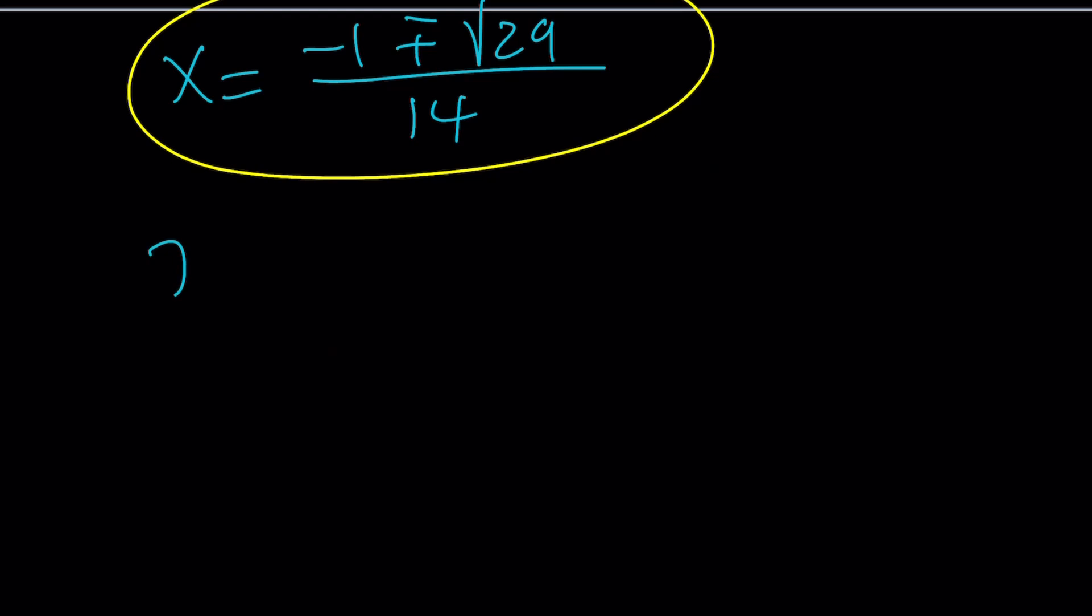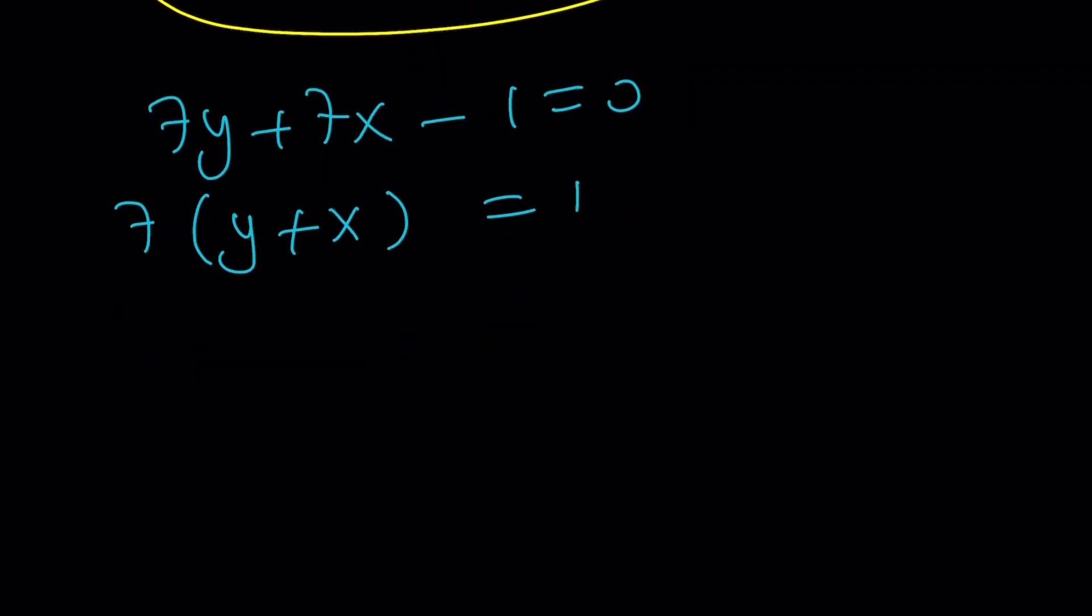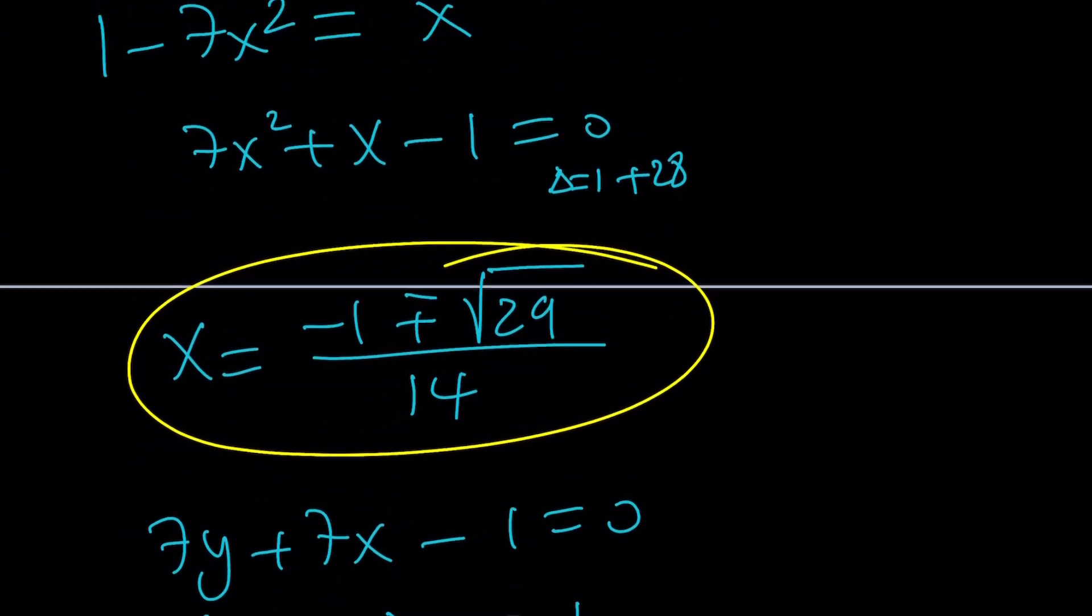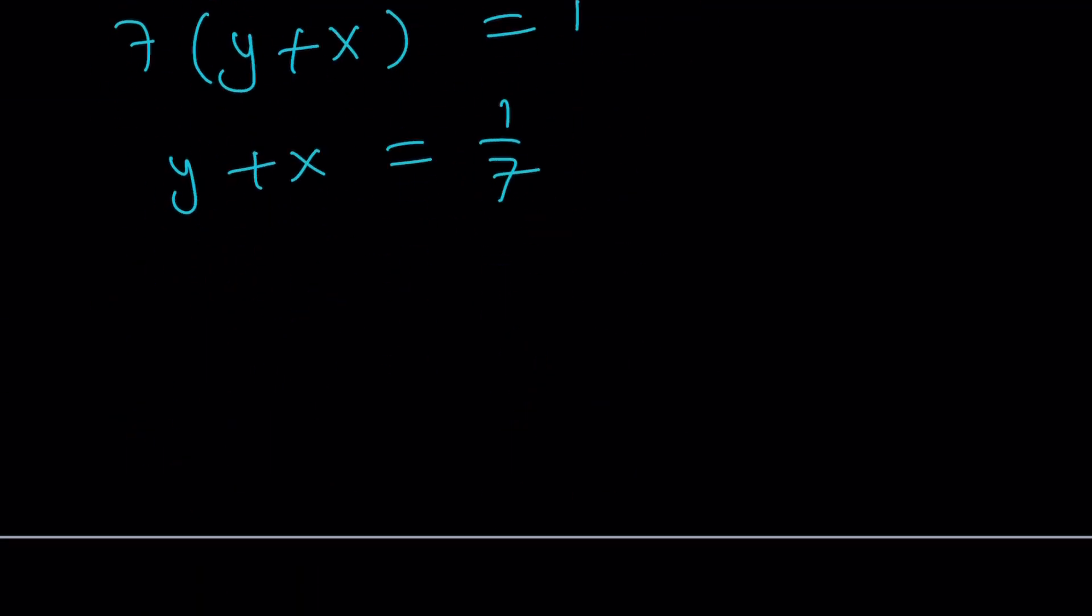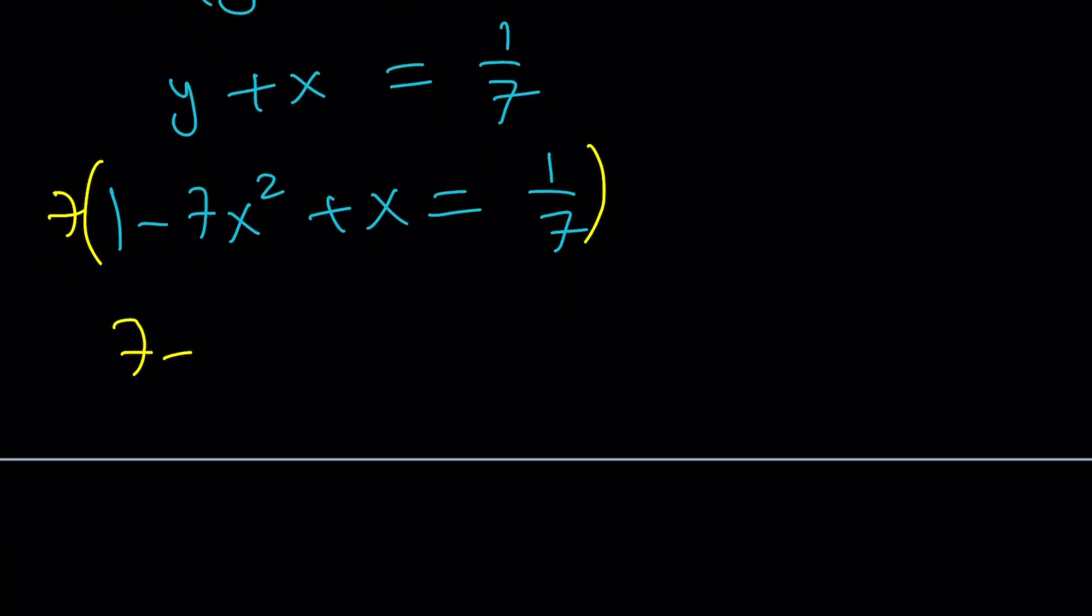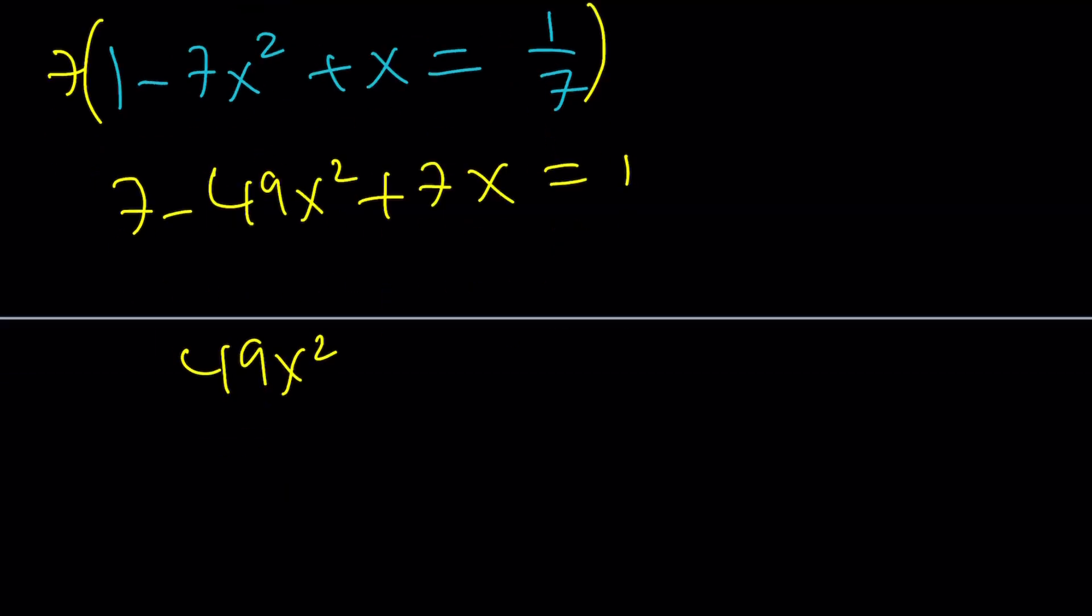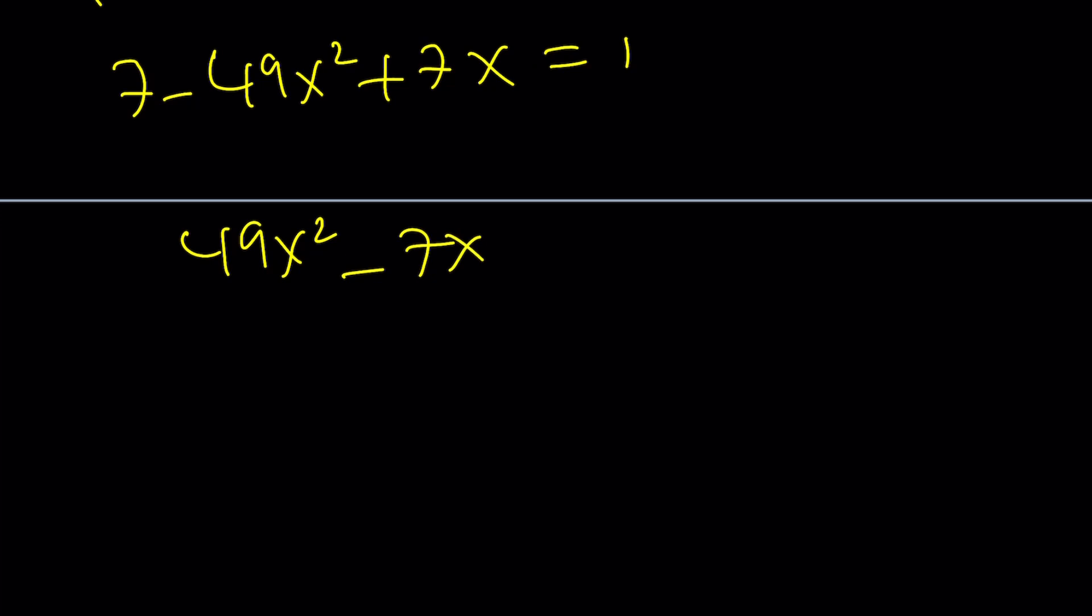7y plus 7x minus 1 equals 0 implies y plus x times 7 equals 1. And then finally, y plus x equals 1 seventh. But what is y? Again, y is equal to 1 minus 7x squared from here. Remember that? So let's replace that with 1 minus 7x squared plus x equals 1 seventh. Let's multiply everything by 7 so we can get rid of the fraction. 7 minus 49x squared plus 7x equals 1. And now put everything on the positive x squared side: 49x squared minus 7x minus 6 equals 0.